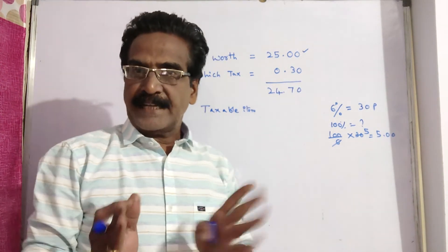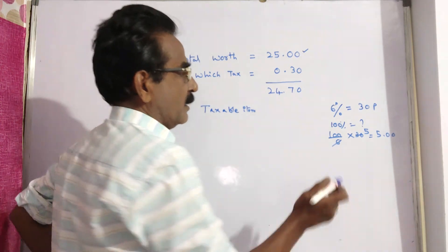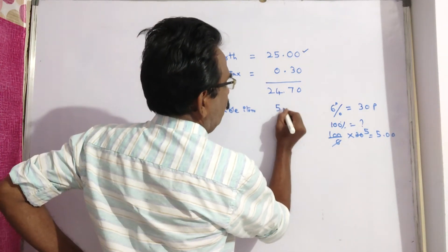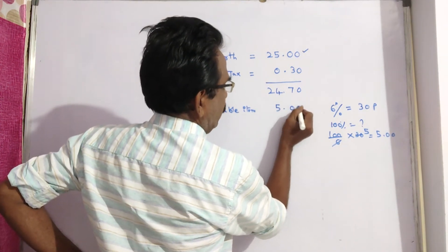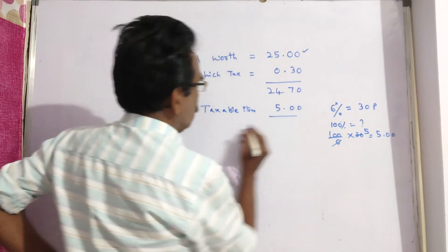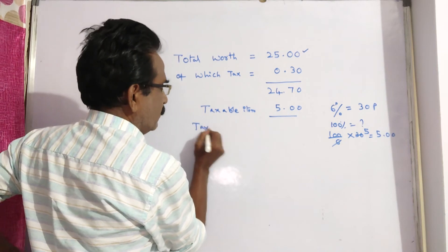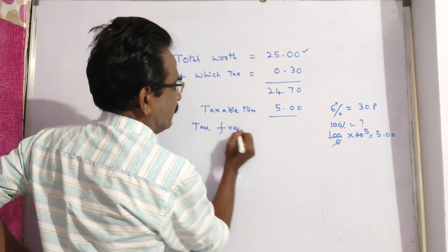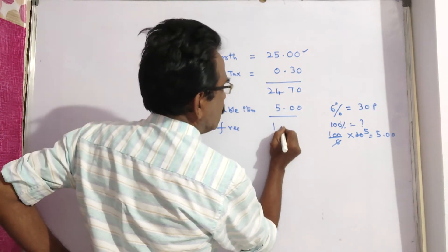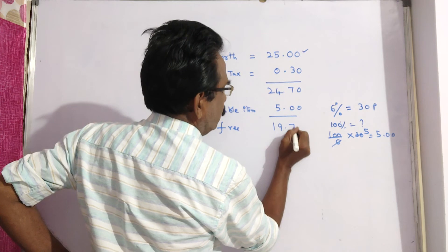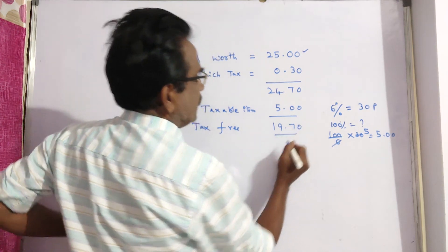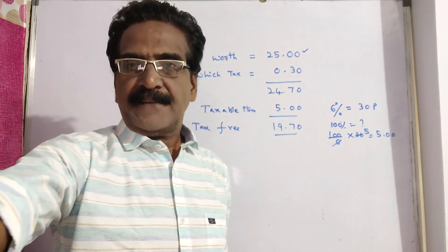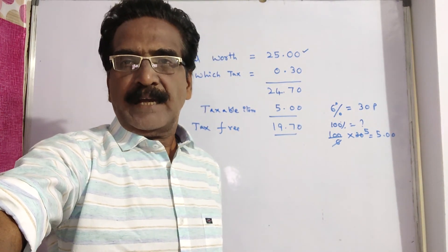The cost of taxable items is rupees 5. So tax-free items equal rupees 24.75 minus rupees 5, which is rupees 19.75. So this is your answer. Thank you friends, have a nice day.